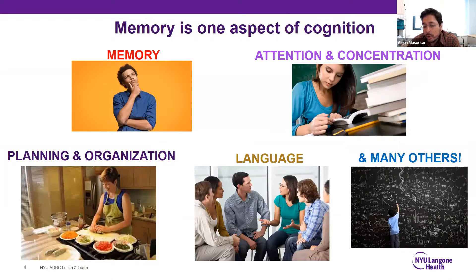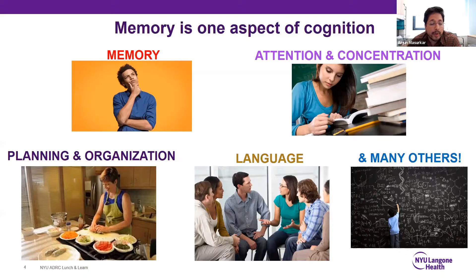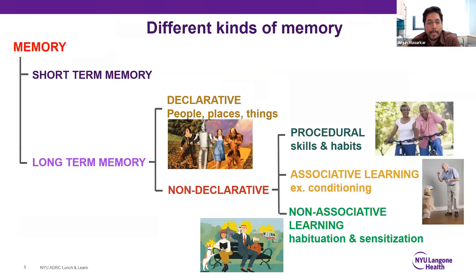Memory is really only one aspect of cognition. There are many domains of thought — attention and concentration, planning and organization, language, and many others. There can be 50 to 100 different categories of thinking, and they're somewhat overlapping. For example, you need to understand language to remember things; you need to pay attention to remember things. There are also different kinds of memory.